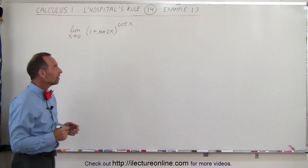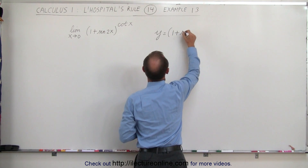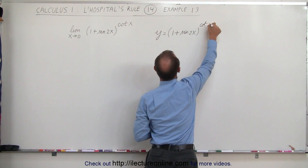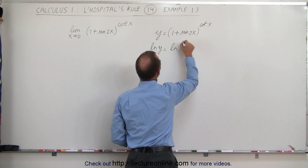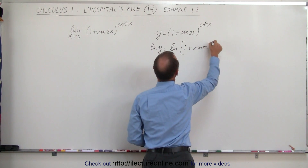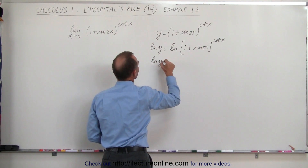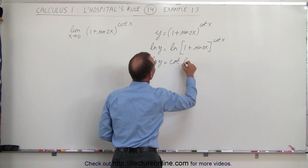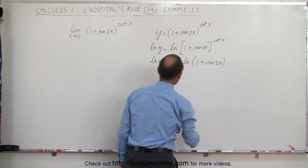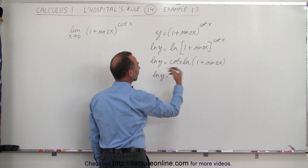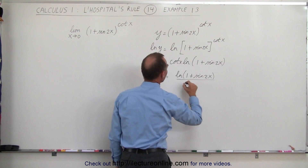We have a trick for that. Let's say that y is equal to this function — 1 plus the sine of 2x raised to the cotangent of x. If we now take the natural log of y, we can say that ln(y) equals the natural log of 1 plus sine of 2x raised to the cotangent of x. The rule with natural logs lets us bring the exponent in front, so ln(y) equals cotangent of x times the natural log of 1 plus sine of 2x. This can then be written as a fraction: the natural log of 1 plus sine of 2x, divided by the tangent of x.